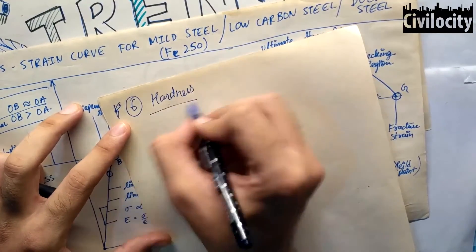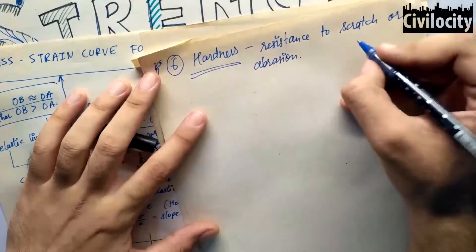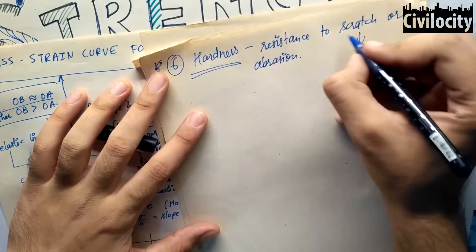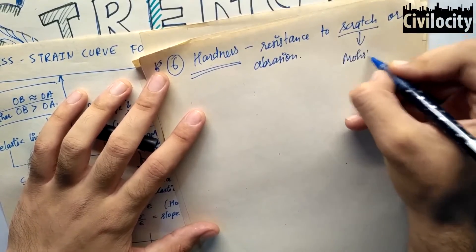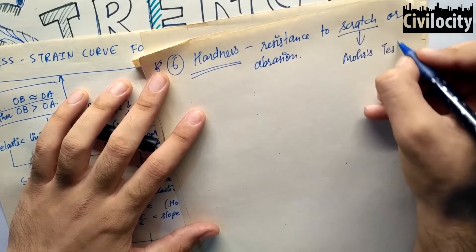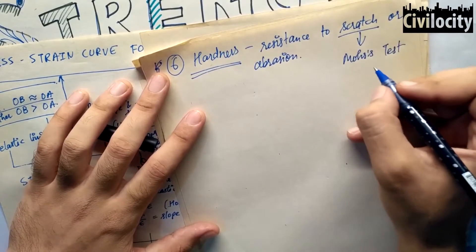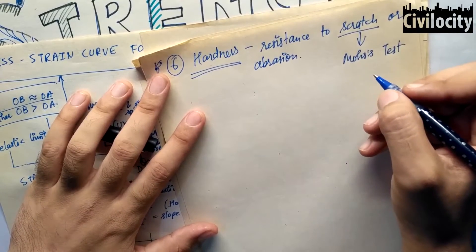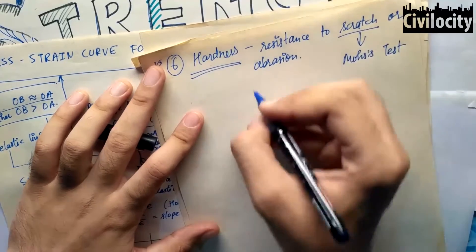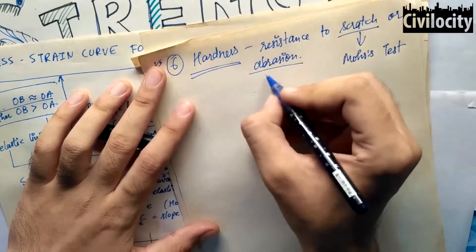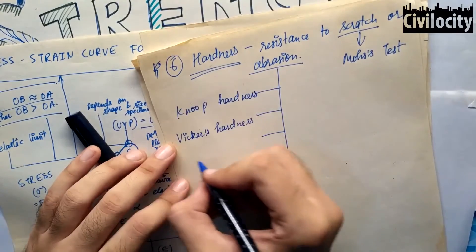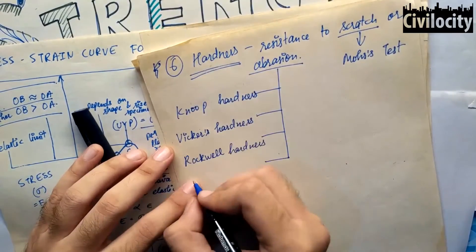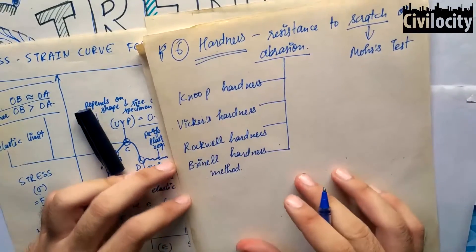Our next property is hardness. Hardness is the resistance to scratch or abrasion. Abrasion means deterioration — a material that doesn't deteriorate easily is a hard material, and scratches don't come easily. Scratch tests are the most commonly used to measure hardness. For abrasion, we have four methods: Knoop hardness, Vickers hardness, Rockwell hardness, and Brinell hardness method.